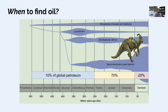Just about all of the petroleum we have dates to the last 500 million years, with big enrichment in the period when the dinosaurs were around — the Triassic, Jurassic, and Cretaceous. About 70% of global petroleum was produced during those ages. So if you want to find petroleum, you've got to find rocks of this age, plus the right conditions to have had those organisms present there.